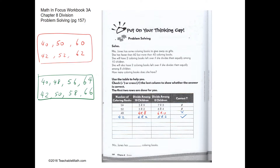Let's look at this problem: Mrs. Jones has some coloring books. She has fewer than 60 but more than 40. If she divides them equally among 10 kids, she will have 2 left over. If she divides them equally among 8 kids, she will also have 2 left over.